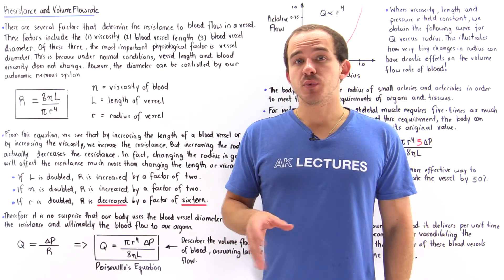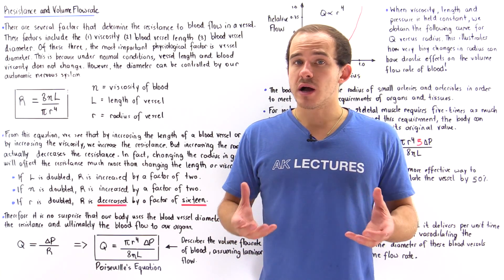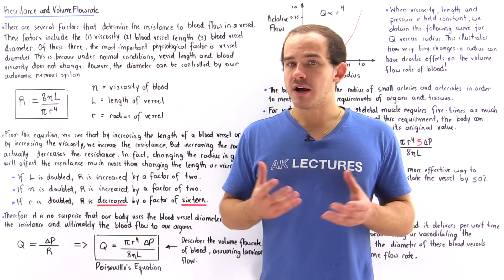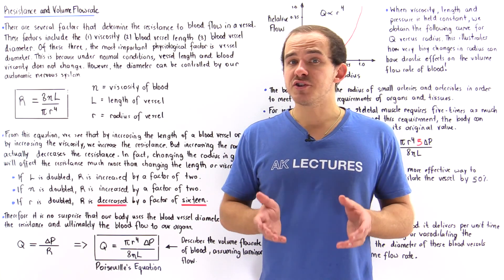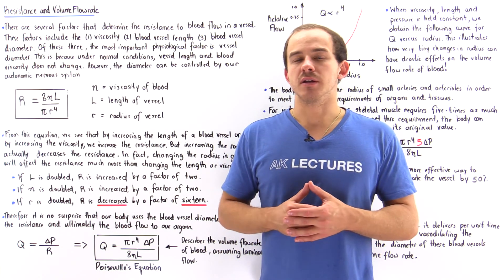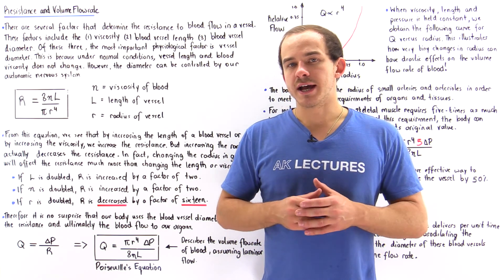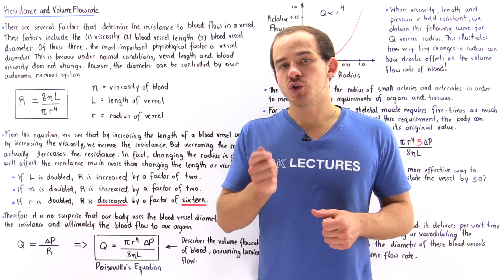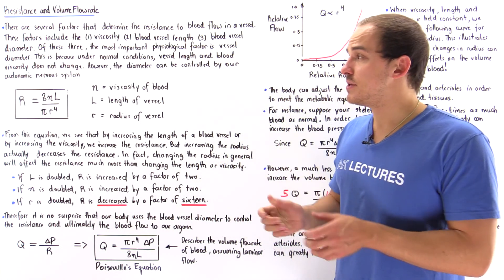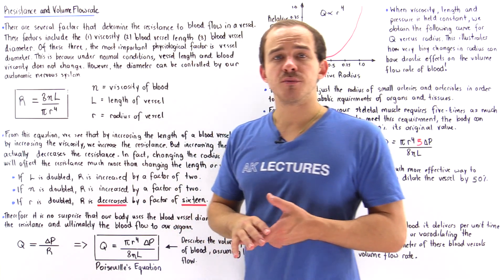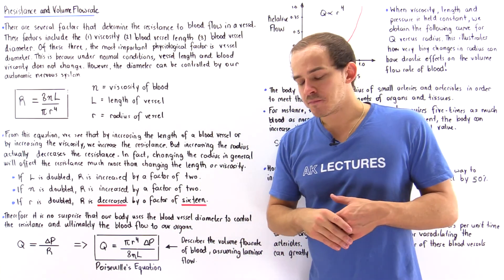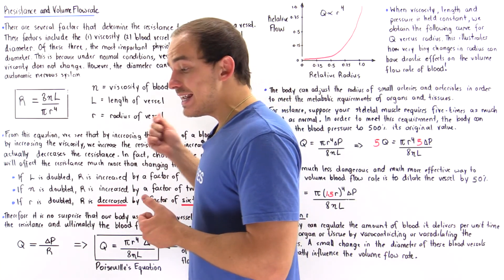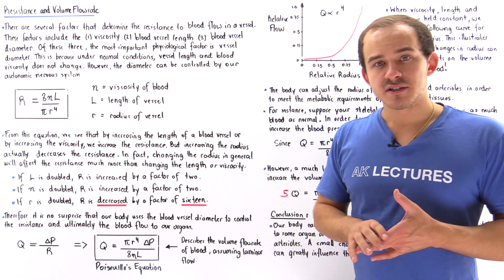Another important measurement that describes the way blood flows inside blood vessels of our cardiovascular system is the resistance of our blood vessel. In this lecture, we're not only going to focus on resistance, we're also going to discuss the relationship between resistance and something called the volume flow rate of our blood. Let's begin by describing the factors that influence the resistance of the blood vessel.